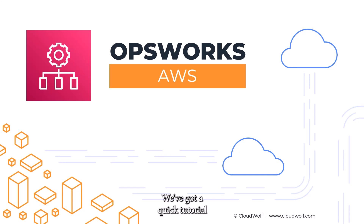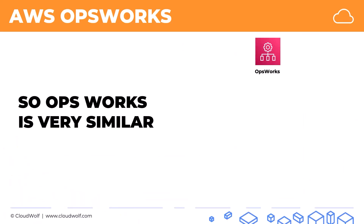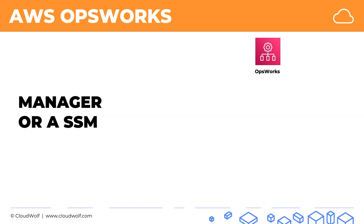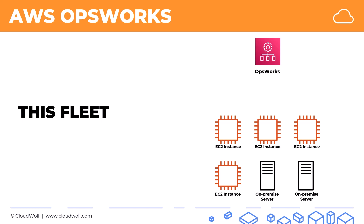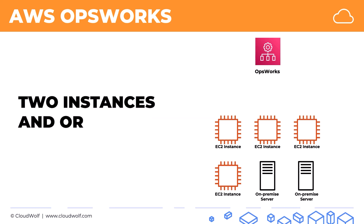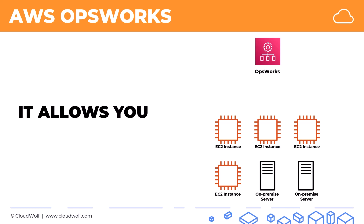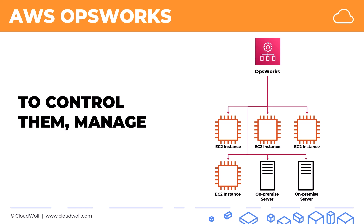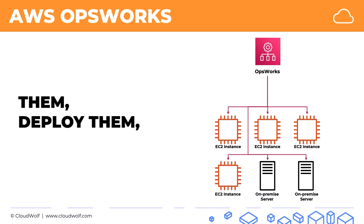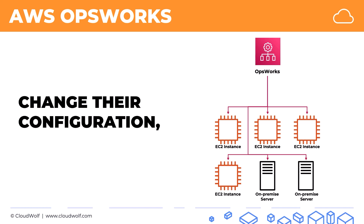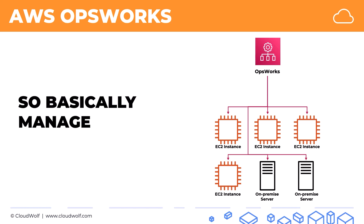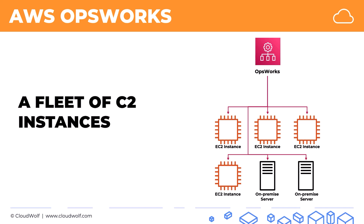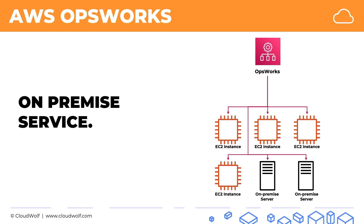Hello and welcome back. Today we've got a quick tutorial about OpsWorks. OpsWorks is very similar to Systems Manager or SSM. If you have a fleet of EC2 instances and/or on-premise servers, it allows you to control them, manage them, deploy them, change their configuration, and automate things across them — basically manage a fleet of EC2 instances or on-premise servers.